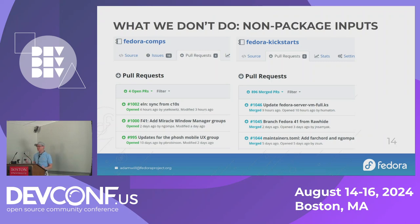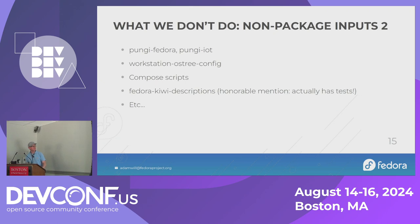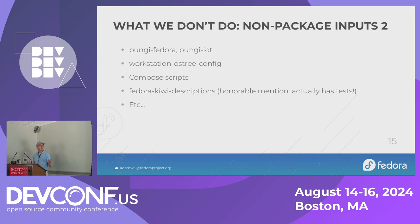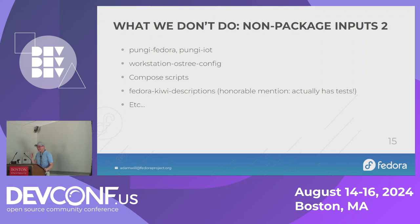There are more non-package inputs — a very non-comprehensive list: Pungie, Fedora Pungie IoT (the compose definitions themselves), Workstation OSTree config (like comps for immutable images), composed scripts (just bash scripts that may blow up), and Fedora Kiwi Descriptions. Kiwi Descriptions is a newer form of recipe, like kickstarts but for the Kiwi tool, and that actually has tests — when you submit a pull request, it builds some images and sees if it works. Great job, Neil.